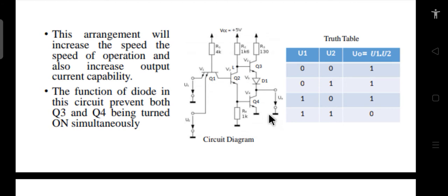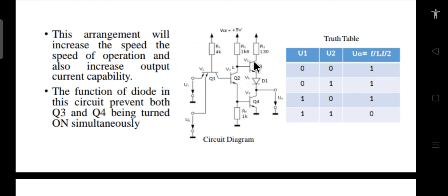Another advantage of the totem pole is that Q3 works as an emitter follower. The emitter follower offers very low output impedance. Because of this low output impedance, this particular configuration has very fast switching — the speed is very high compared to other logic families studied earlier. These are the two main advantages of using the totem pole configuration.